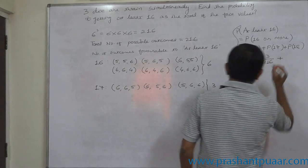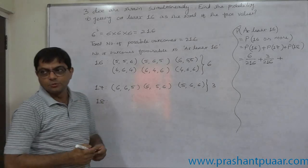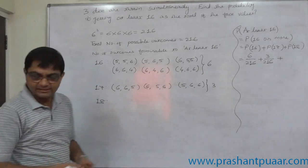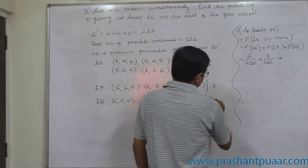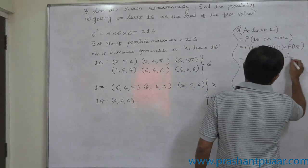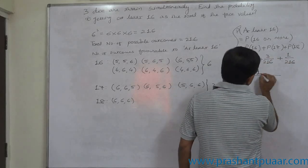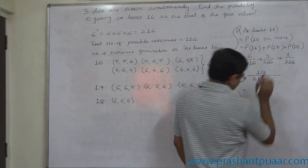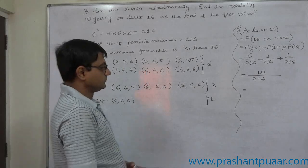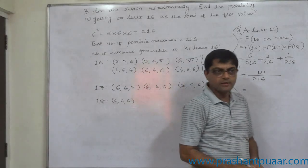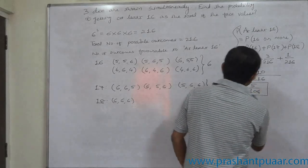And in how many ways is 18 possible? Only one: 6, 6, 6. Probability is 1/216. So the result is 6 + 3 + 1 = 10/216. You can simplify: it comes to 5/108.